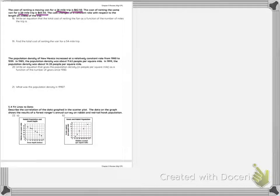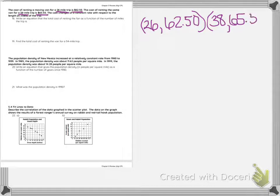So what do I notice about this? I've underlined four things: a mile, an amount, a mile, an amount. So it means I have two ordered pairs. So I have (26, 62.50) and I have (38, 65.50).